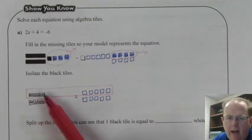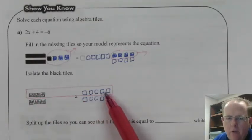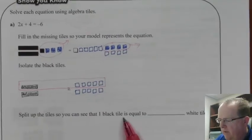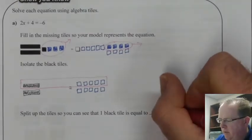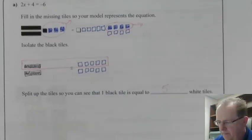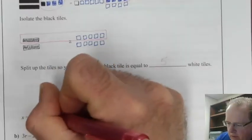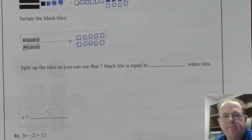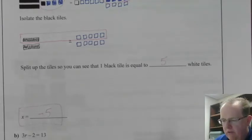We'd see that x is equal to negative 5. Splitting up the tiles, you can see that 1 black tile is equal to 5 white tiles. So therefore, x is equal to negative 5. So that's the process. Let's do one more example using algebra tiles.